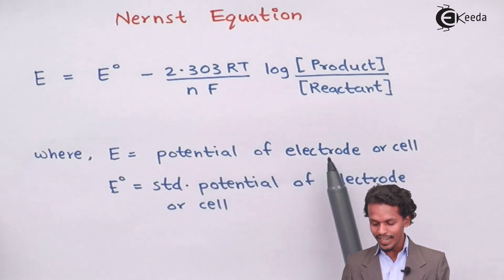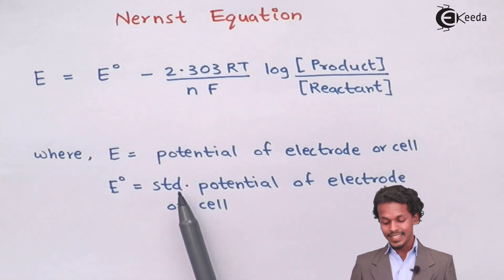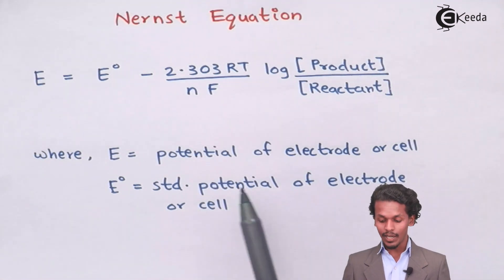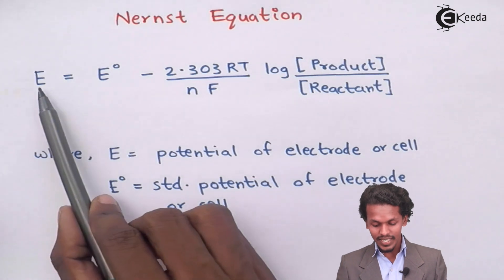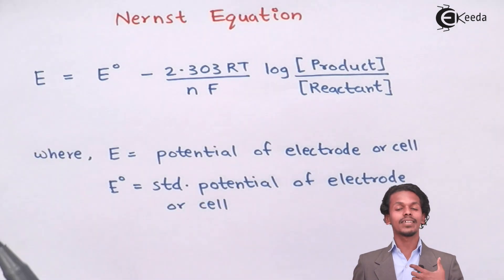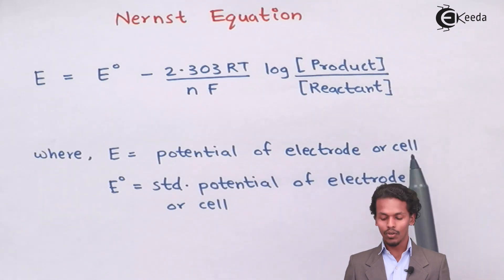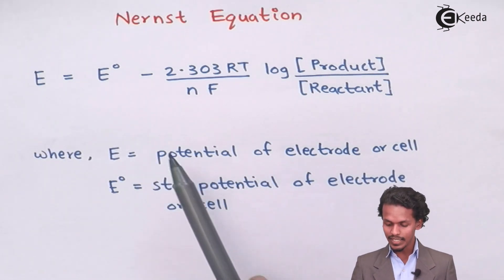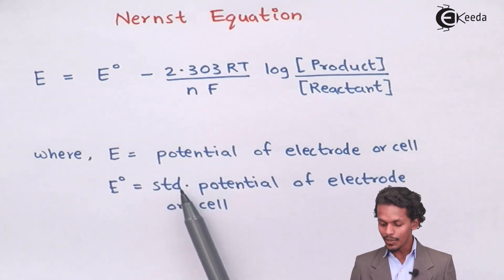In this case, E will be the potential of an electrode or potential of the cell, while E° will be the standard potential of the electrode or the standard potential of the cell. If I represent it as E cell, then it will be the potential of the cell. If I represent E° as E°cell, then it will be the standard potential of the cell.